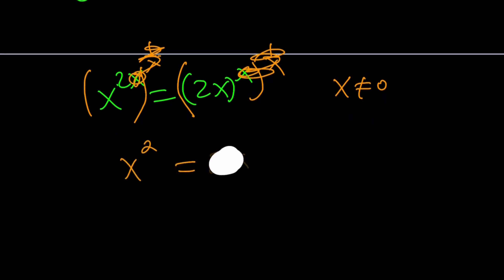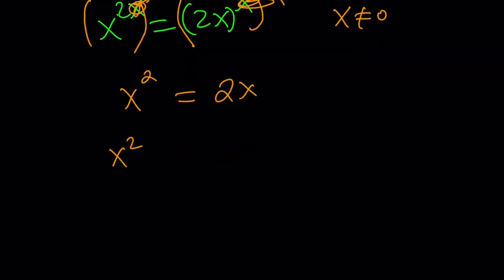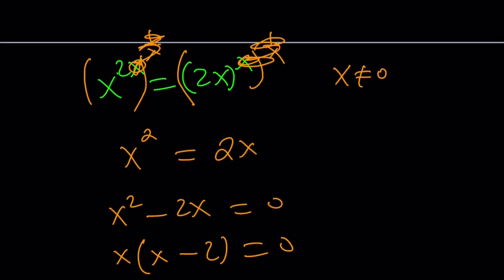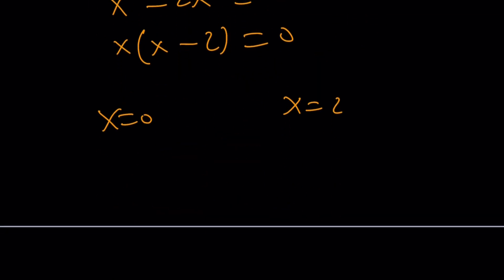And then we can go ahead and bring everything on the same side. Don't cancel out anything, even though it's not going to matter. Just do this. And then take out x. You get two solutions from here. x equals 0 and x equals 2. But remember, x cannot equal 0, which means we end up with a single solution, which is x equals 2.